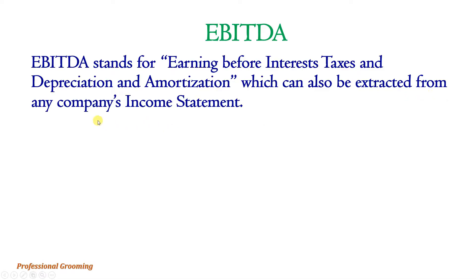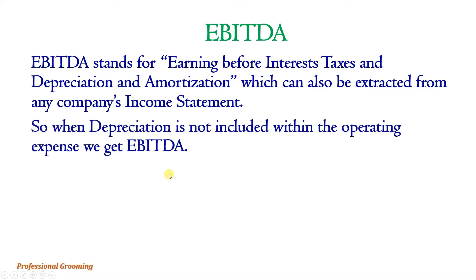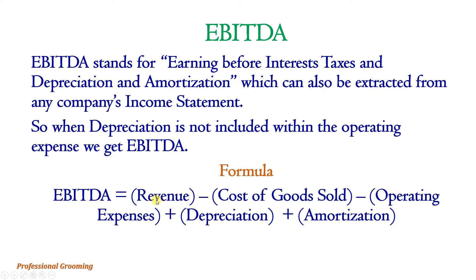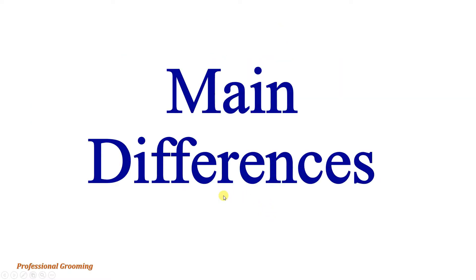When depreciation is not included within the operating expenses, we get EBITDA. The formula is: EBITDA equals total revenue or sales minus cost of goods sold (direct expenses) minus operating expenses, plus depreciation, plus amortization expenses. In EBIT we subtract depreciation and amortization within operating expenses, but in EBITDA we add them back — making them plus depreciation and amortization.